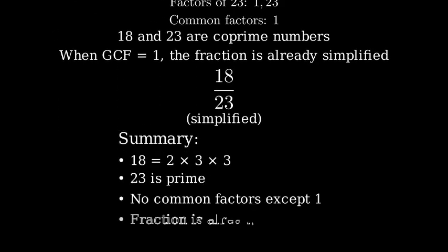In summary, we found that 18 equals 2 times 3 times 3, and 23 is a prime number. Since they share no common factors except 1, the fraction 18 over 23 is already in its simplest form.